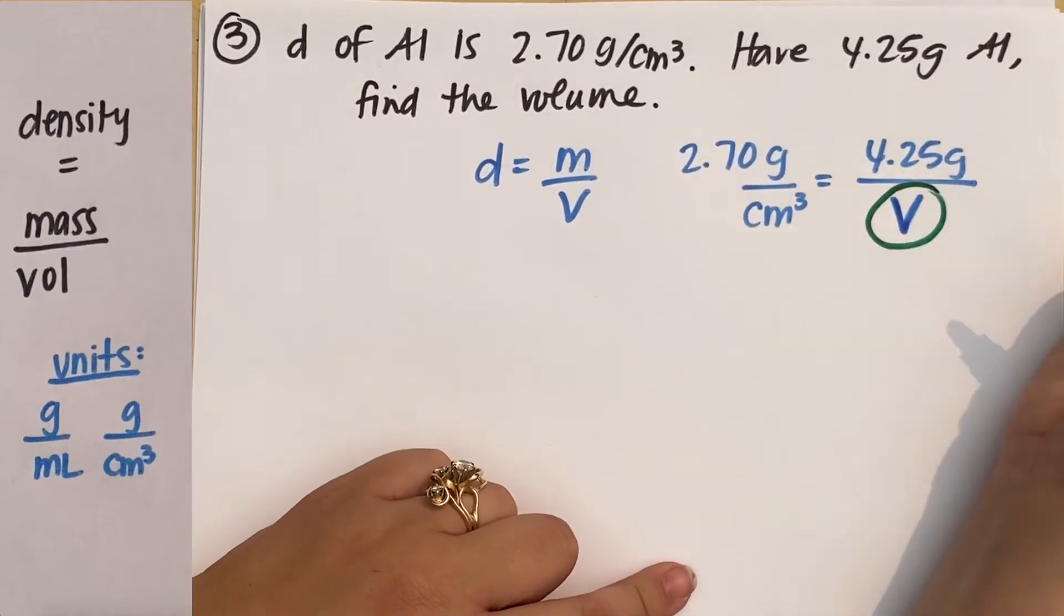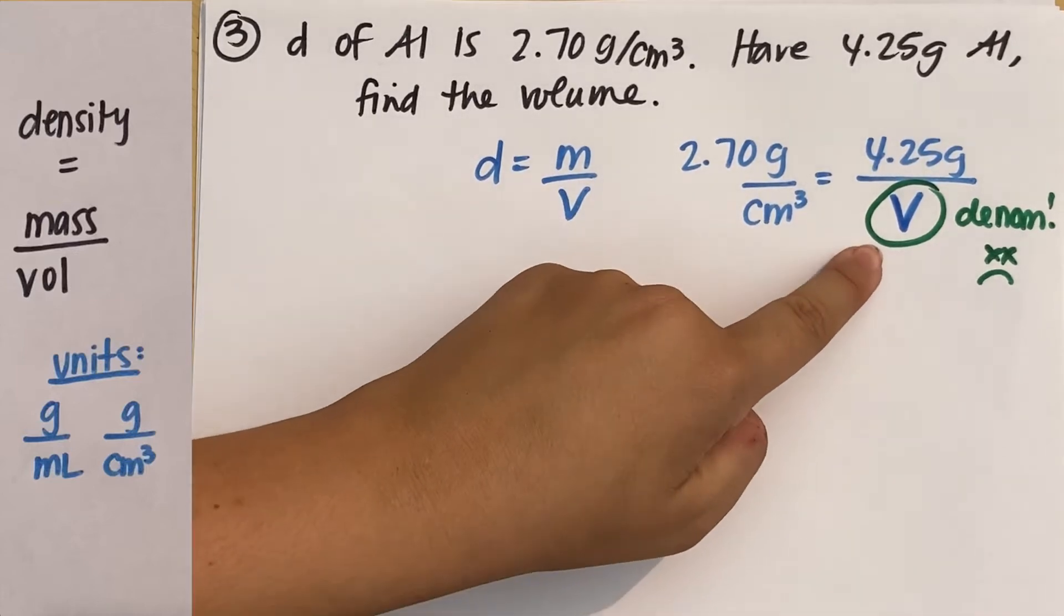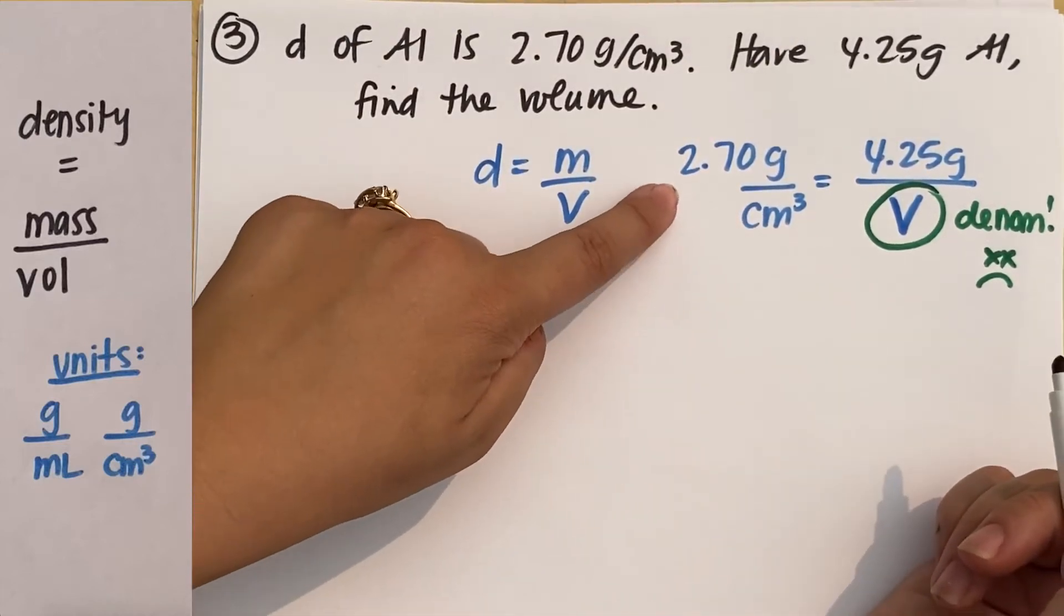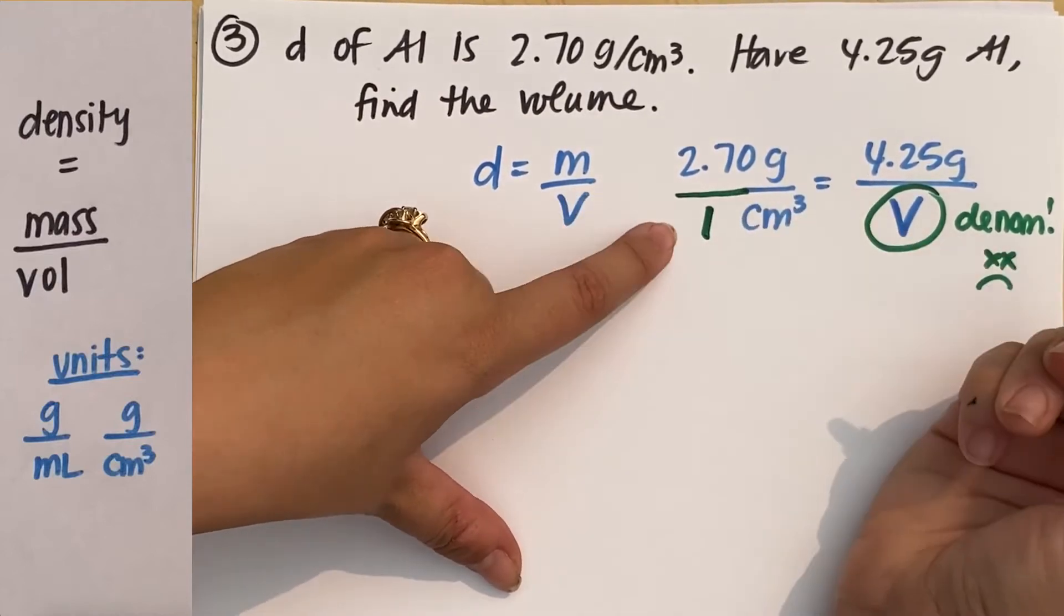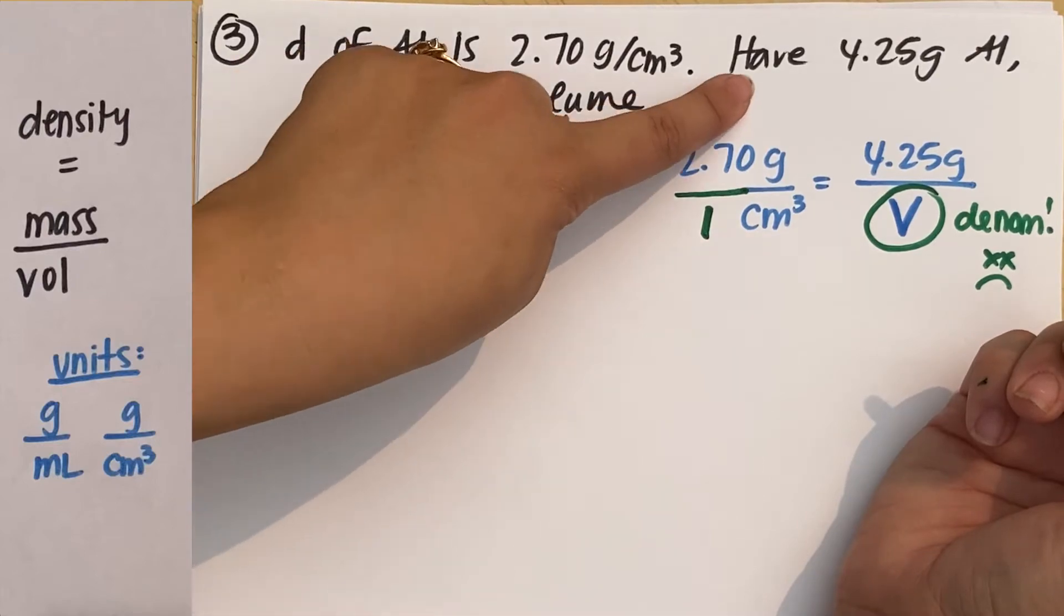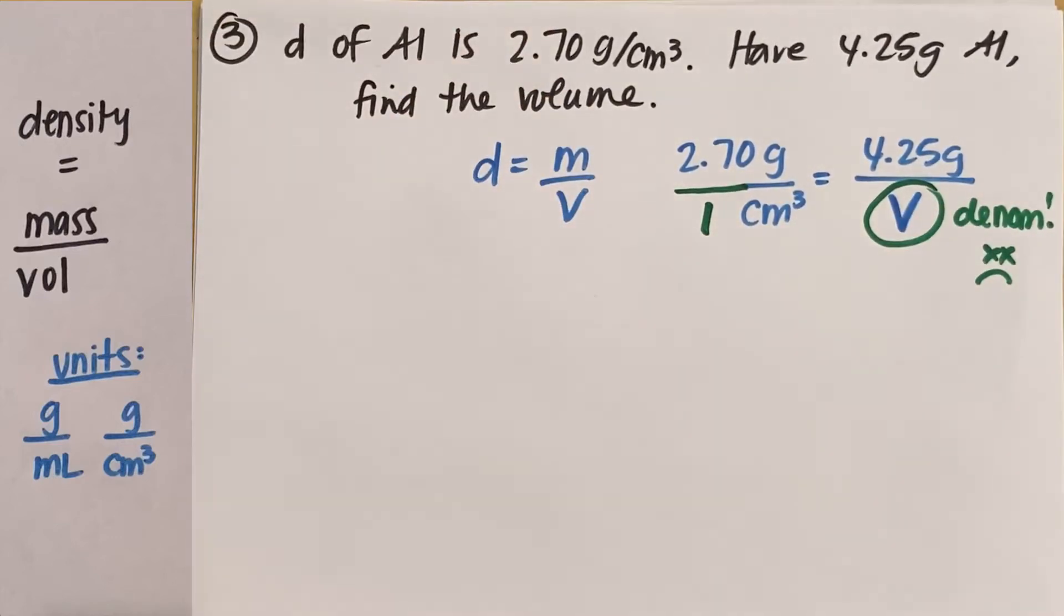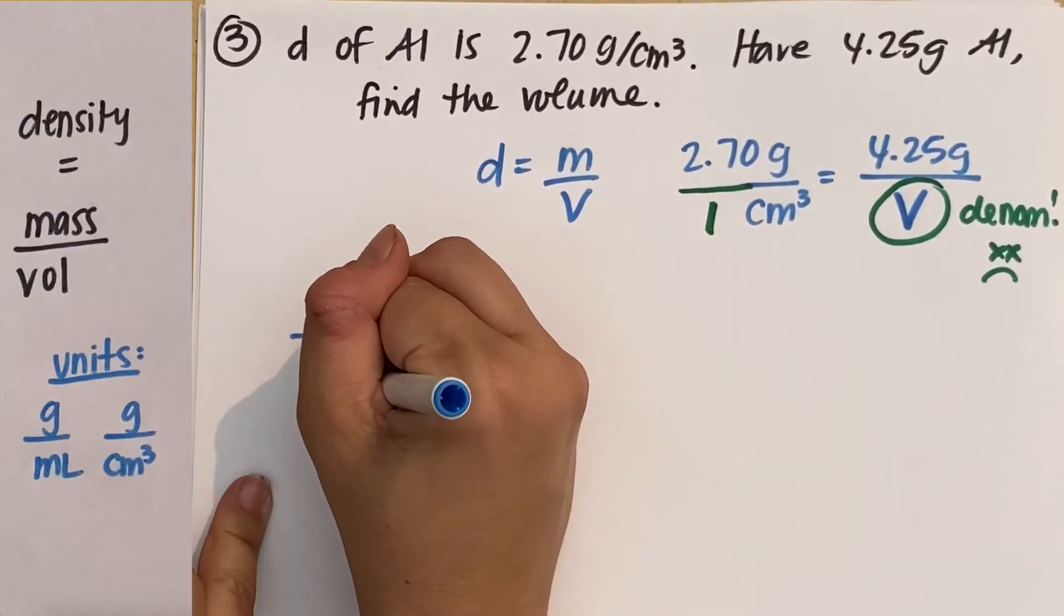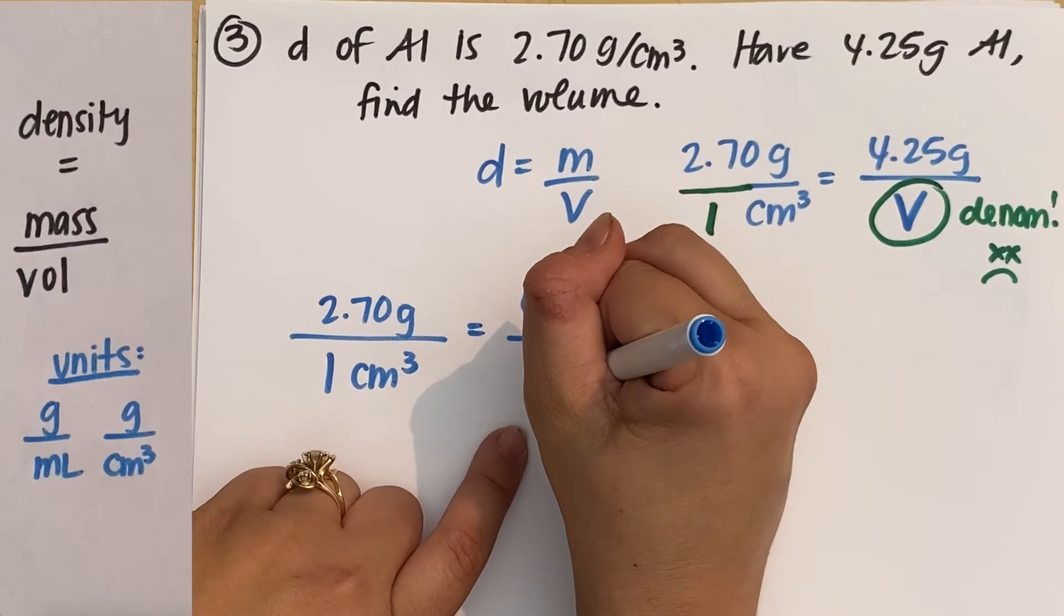The reason this is hard is because the unknown you're solving for is on the denominator. So if math is not super duper your thing, or if it's just been a while solving for something on the denominator, here's my trick for how I would set this up. What I would do is fix your density so that you can say it's 2.70 grams per one centimeter cubed. Because anything divided by one is still its same number. So you're not changing anything about the density. You're keeping that number the same, but now you have a much easier problem to solve because you can do your crisscross method with equivalent fractions.